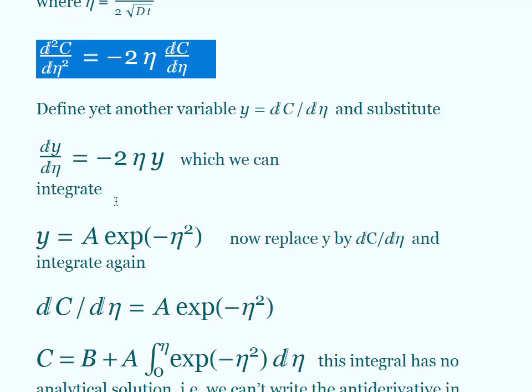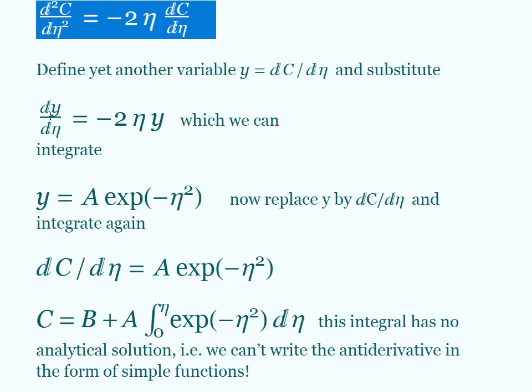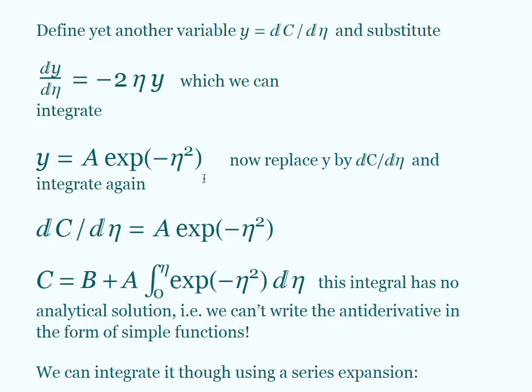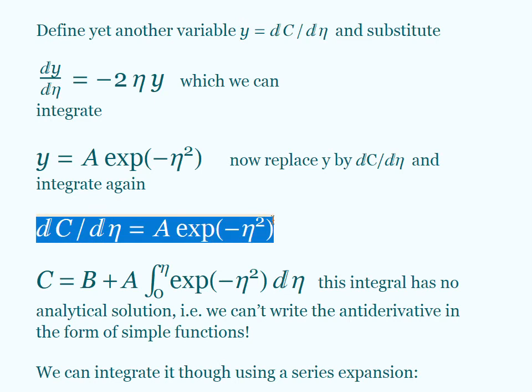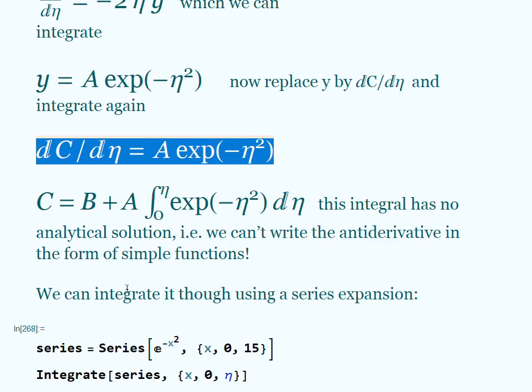Now we can integrate. When we take the integral of this, pulling this dη over and the y over there, we're going to get a natural log. Then I've taken the exponential of both sides because we're solving for y. So we're going to have y equals A times the exponential of minus eta squared. Then we can replace the y with dc/dη, that was the way we defined y. Now we have another first order that we can separate and take the integral. So the integral of dC is C. I have an integration constant. And then I want to integrate this term over here. The A can be pulled out because it's a constant, and I'm left with this integral.